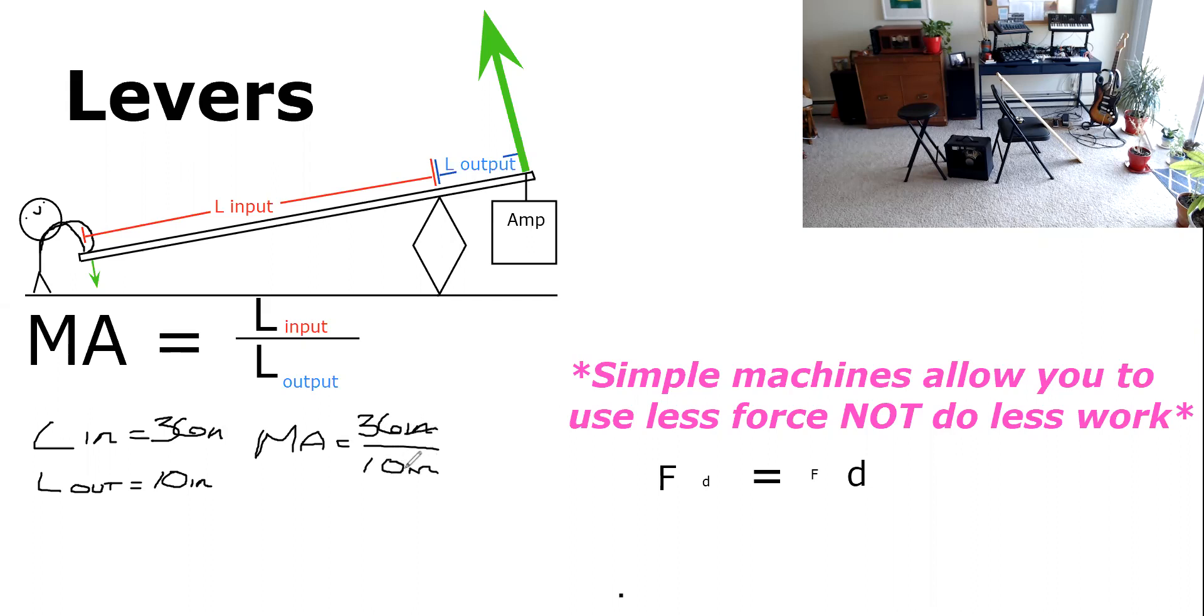Notice that our units cancel out here. Mechanical advantage is a unitless number. We divide these two numbers together. We get a mechanical advantage of 3.6.